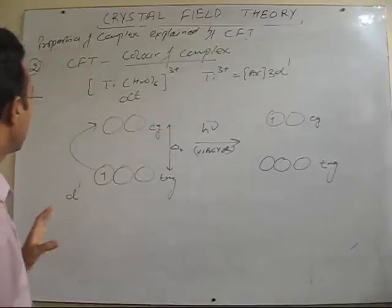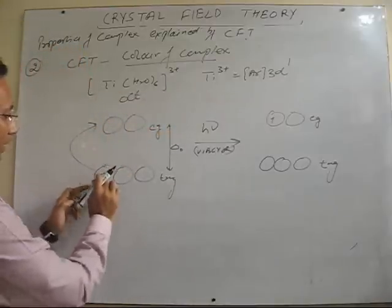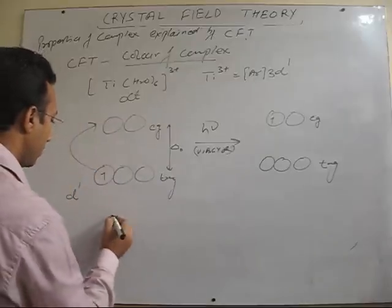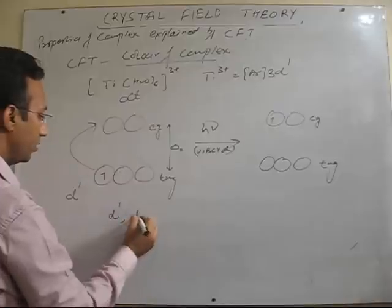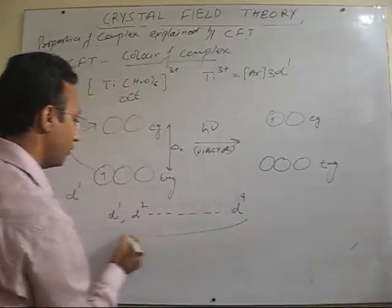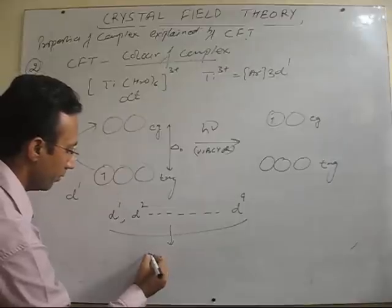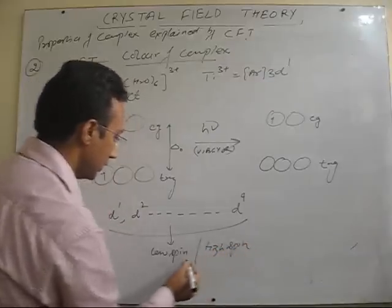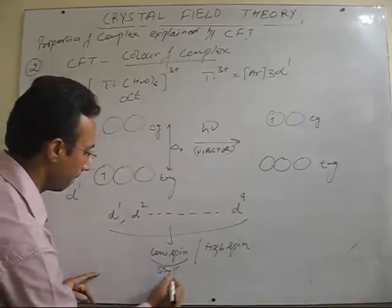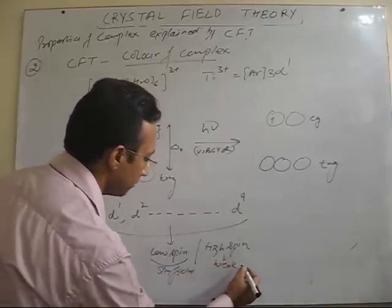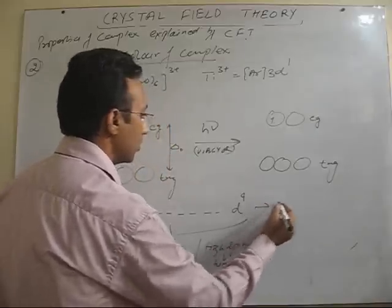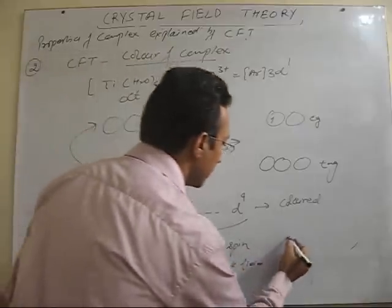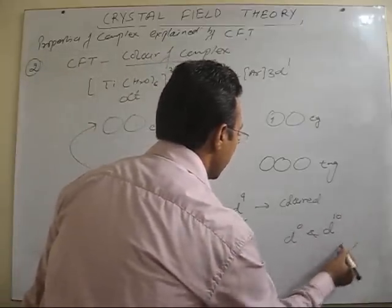Now, very important to understand here, it is very simple. Any arrangement, in any arrangement, if excitation from lower T2G to EG takes place, all those arrangements, all those complexes will be colored. For example, in D1, possibility is there. In D2, up to D9, you will see, I have drawn, in all these cases, whether it is a case of low spin or it is a case of high spin complex, that means whether the ligand is a strong field or the ligand is weak field, doesn't matter. All these cases of the metal ion will be definitely colored. But there are two cases in which there will be no excitation possible, that is, D0 and D10 configuration. For example,